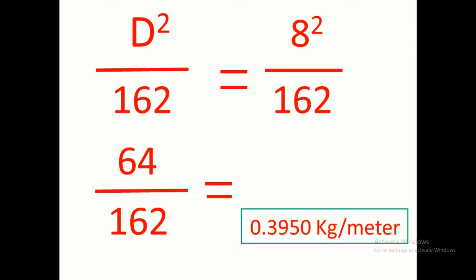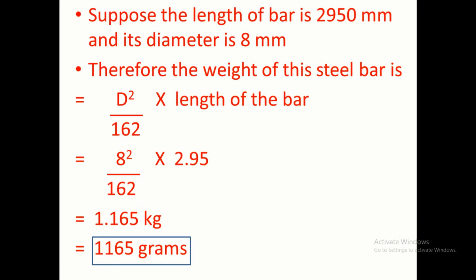It is applicable for one meter length of the bar. Suppose the length of the bar is apart from one meter, then we could see in the example. Now the length of the bar is 2950 mm and its diameter is 8 mm. Therefore the weight of the steel bar is D² by 162 into length of the bar, is equal to 8² by 162 into 2.95, is equal to 1.165 kg, that is equal to 1165 grams.